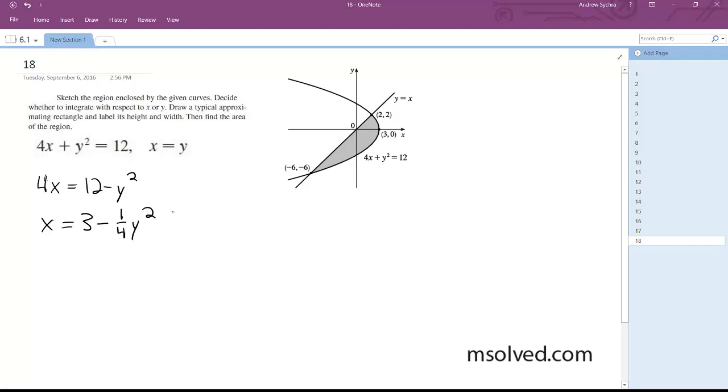And the reason why we do this is because we can have the x equal to each other, and we get x is equal to y. Alright, so we can graph these two. Let's see here. So we got these, so 3 minus 1/4 y squared is equal to y.